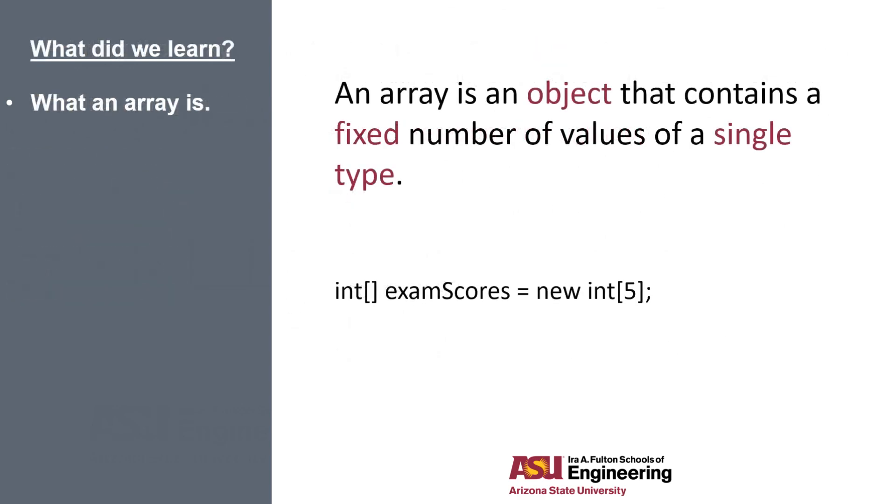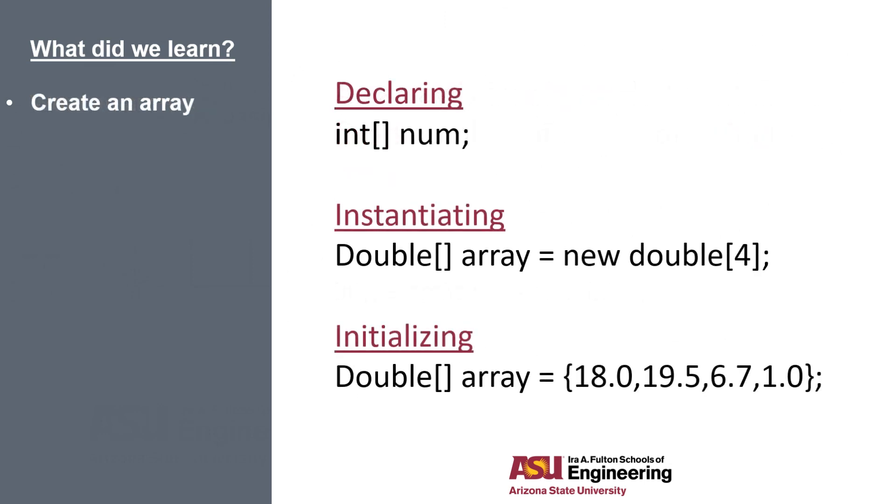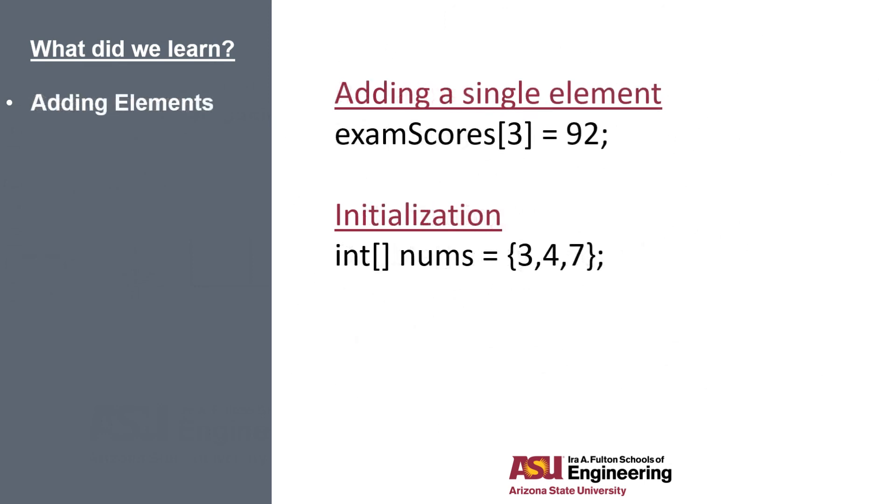So a quick recap of what we've learned. An array is an object that contains a fixed number of values of a single type. So we can't add strings to an array of integers or vice versa. It has to be of the same type. We learned how to declare, instantiate, and initialize an array. We can add a single element to an array, or we can initialize our array with elements when it's first created. And we learned how to print our array using a for loop.